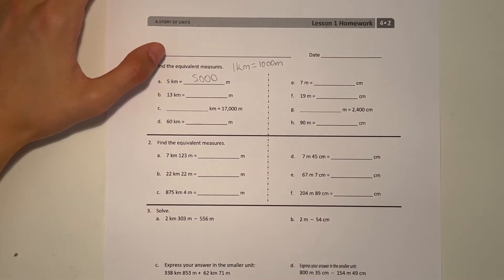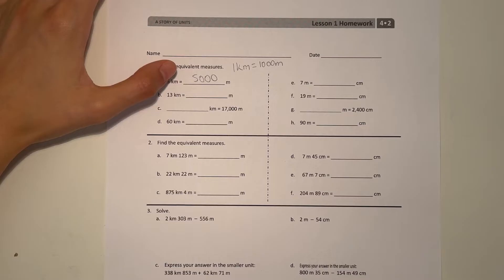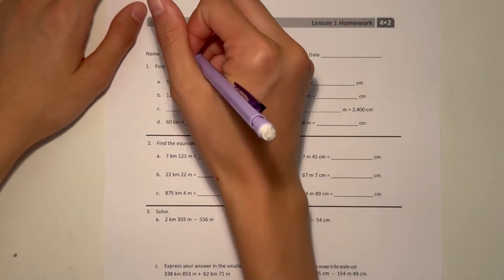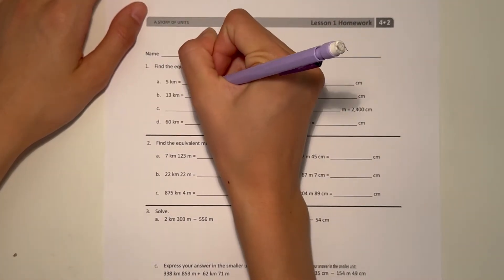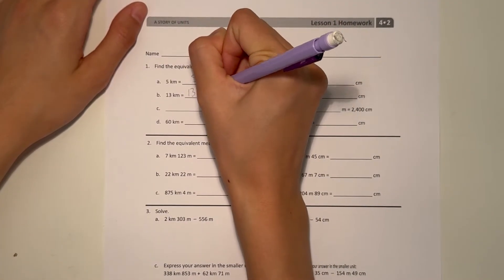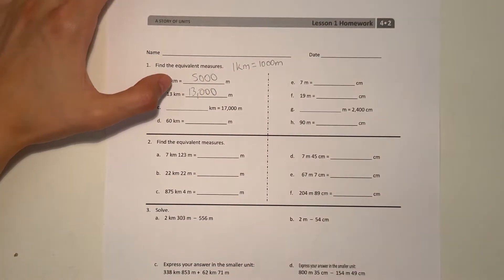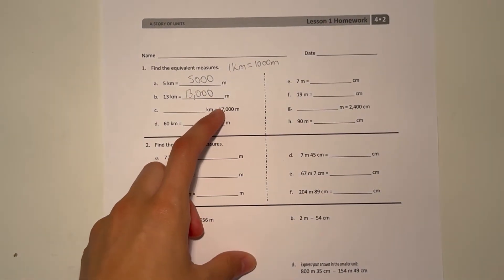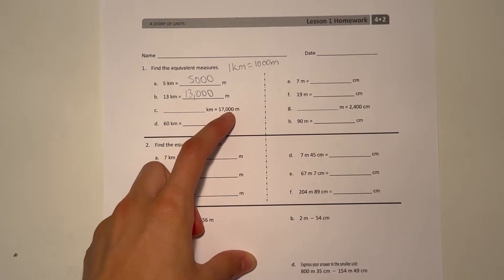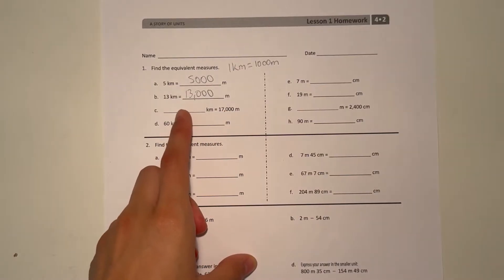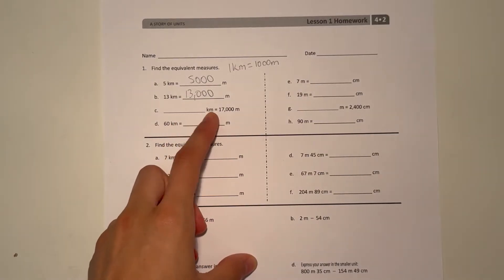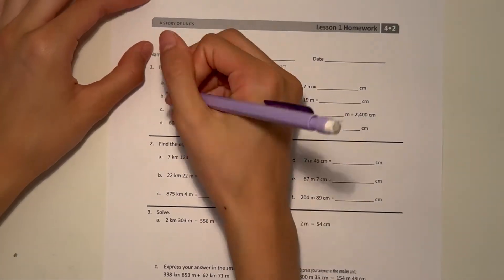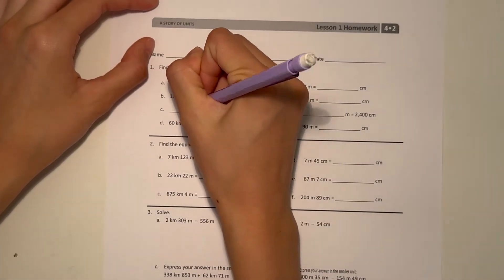And B, 13 km to meters, we just multiply by 1,000. That would be 13,000 meters. And C, 30 multiplied by 1,000 got 17,000. So then if we want to go back to kilometers, all we have to do is divide by 1,000, which will give us 17 kilometers.